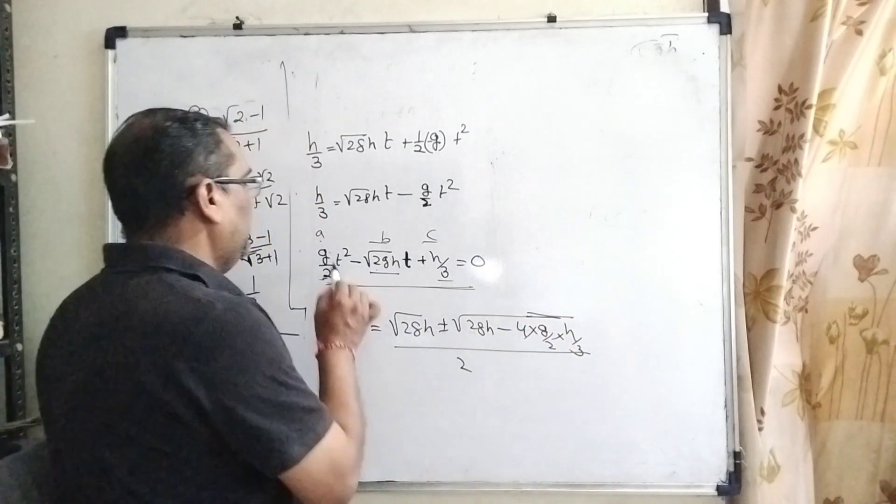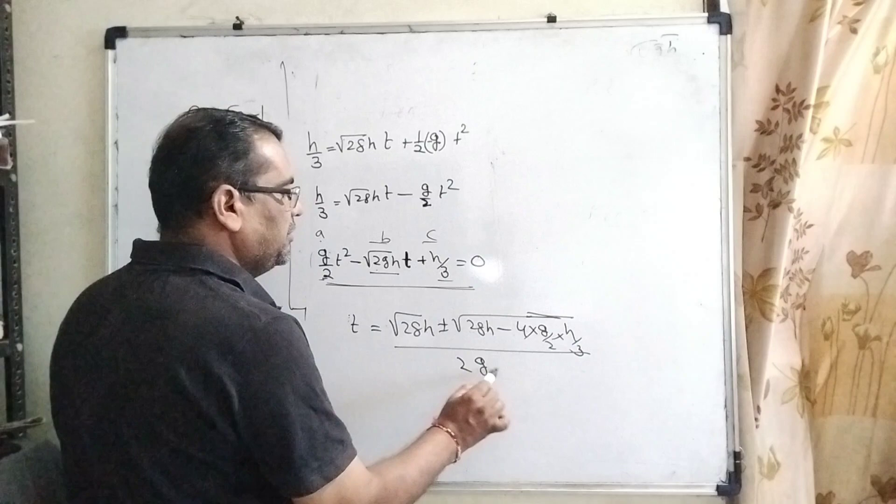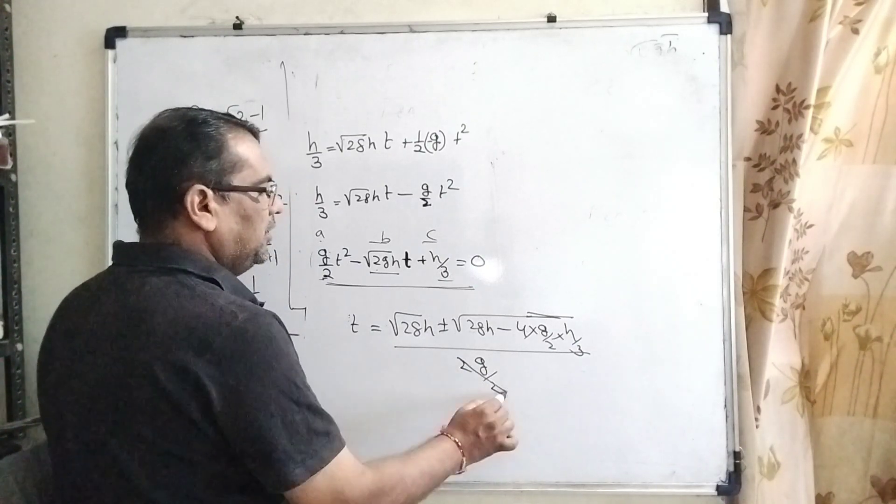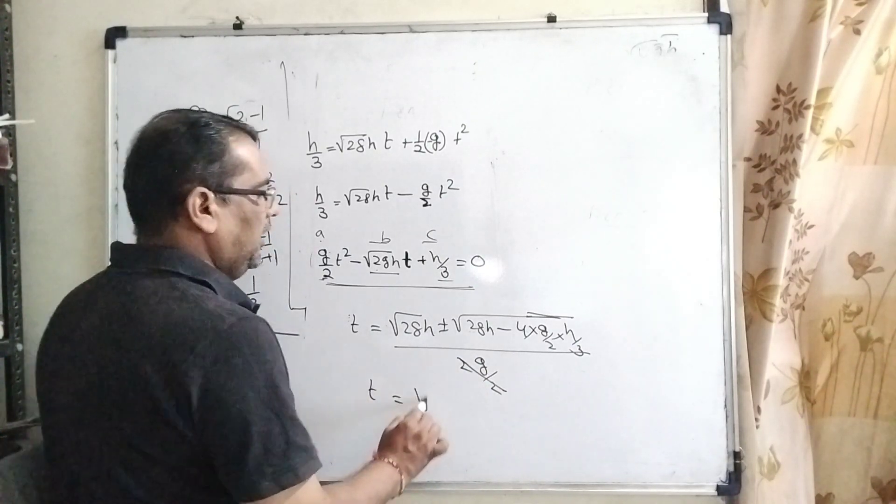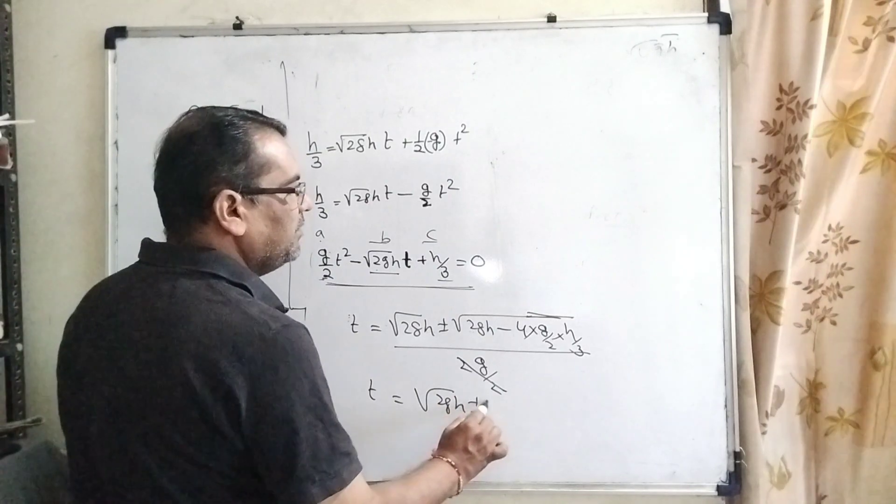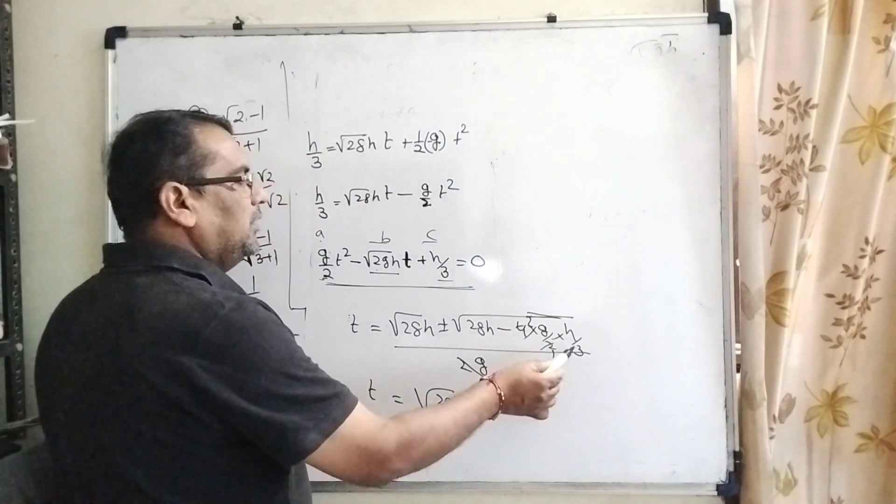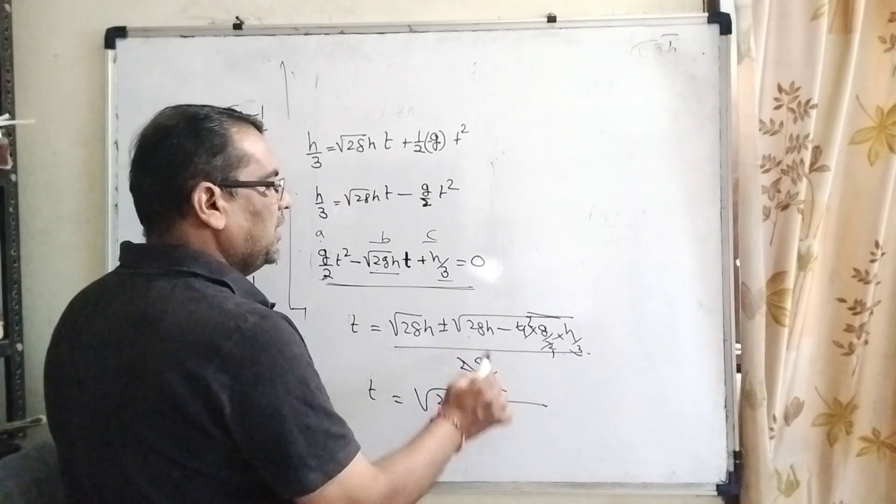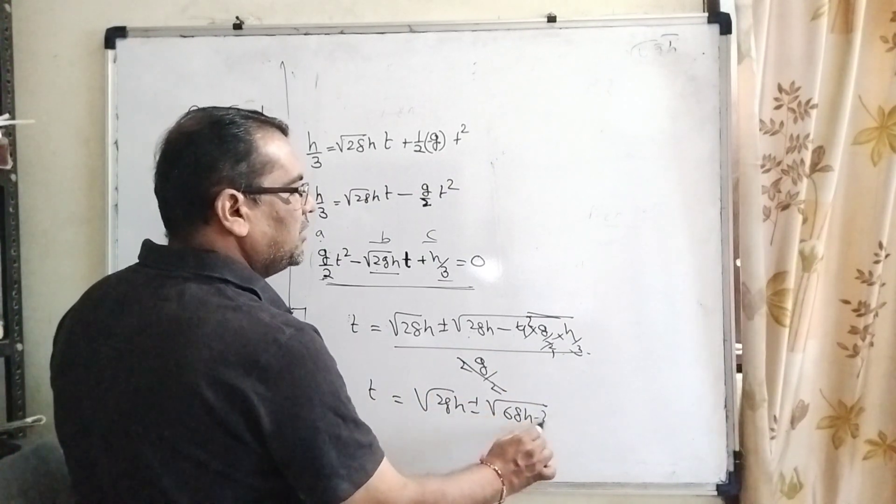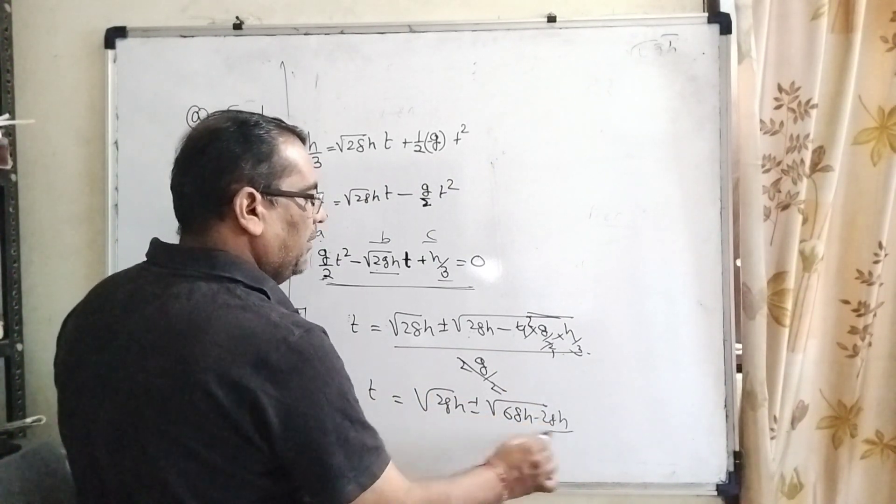This simplifies to t = [√(2gh) ± √(2gh - 2gh/3)] / g.